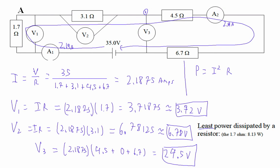So in this case, it's the 1.7 ohm, right? So power is going to be 2.1875 squared times the smallest resistor, which is 1.7. Now, clearly, if we put 6.7 in there, you get a bigger number, so it couldn't be the least, right? So 2.1875 squared times 1.7 is 8.13 watts.